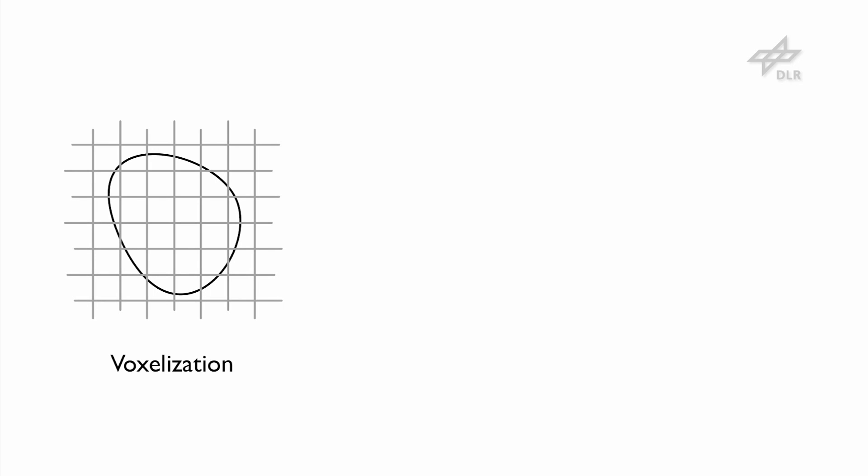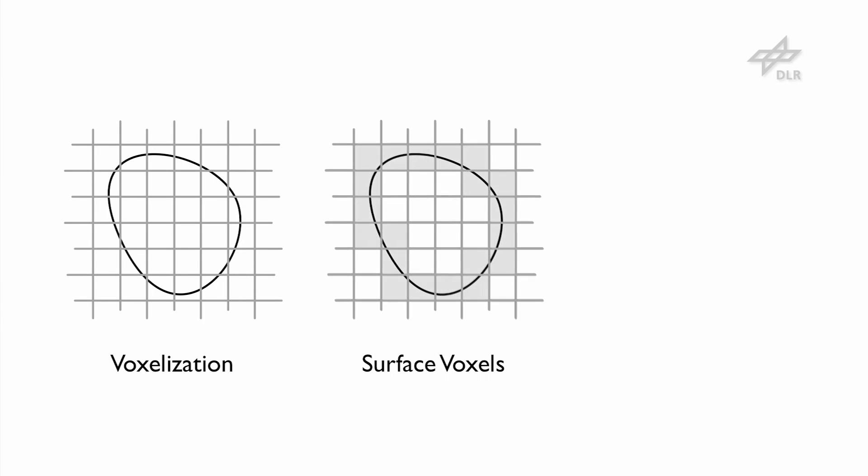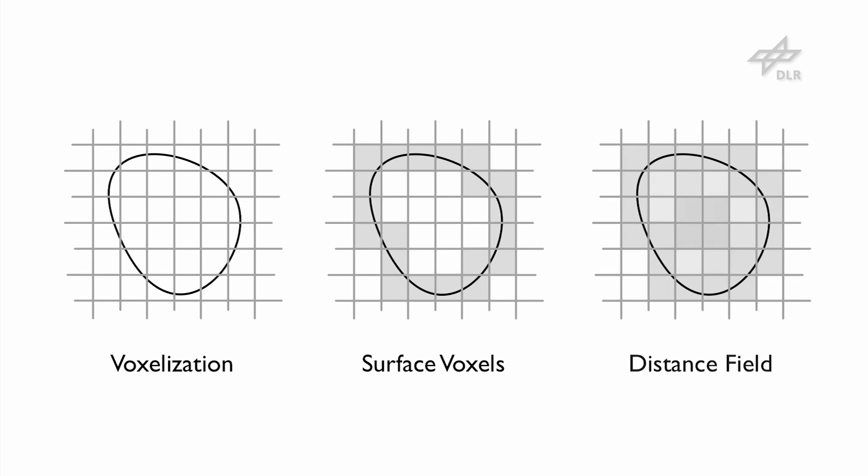In order to generate the voxel map, first, the original object is set into a 3D grid. Second, the set of voxels that collides with the surface is detected. And finally, the Euclidean distance from each voxel center to the object surface is stored in each voxel.